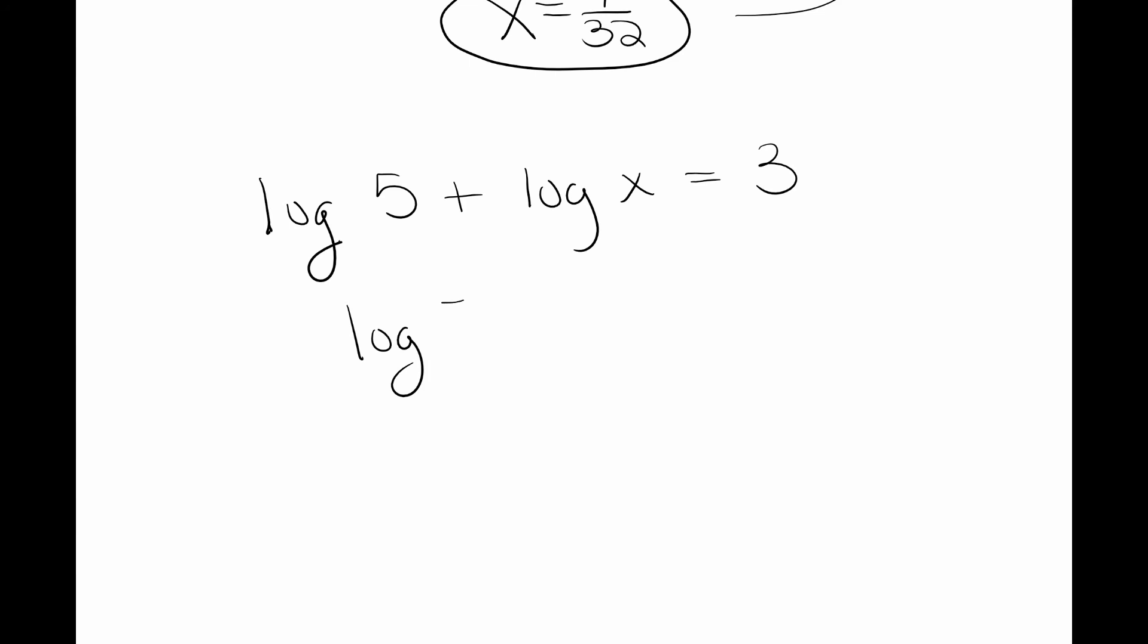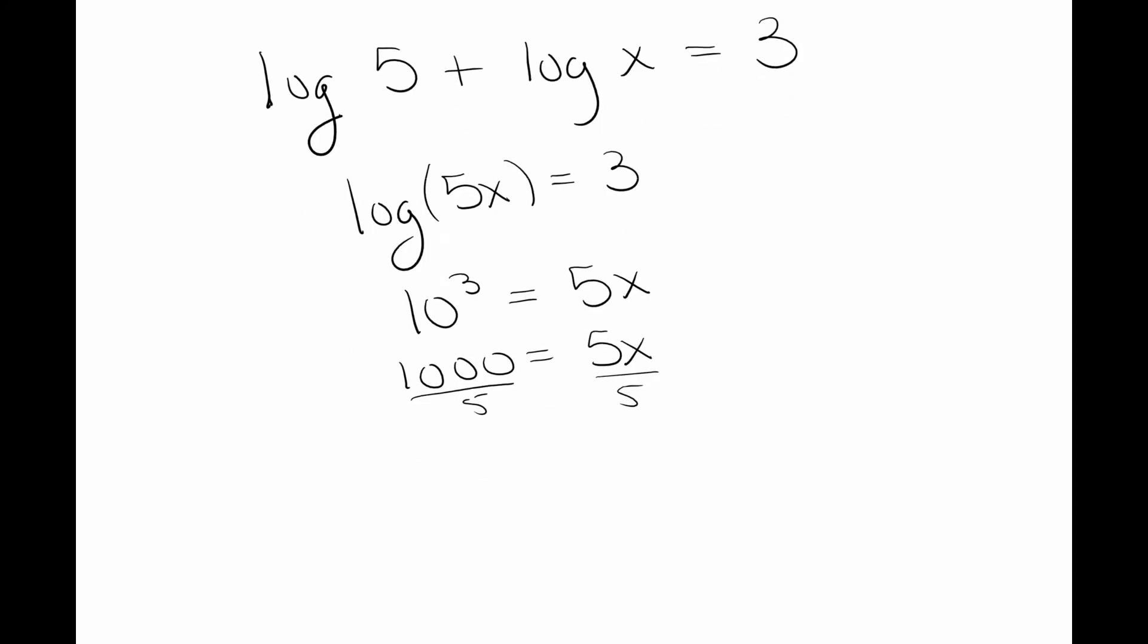The goal is to get a single log. I have addition, that means you multiply 5 and x to bring it together as one log. I'm changing this to exponential notation. The base is 10 because you don't see anything, so 10 raised to the third power is equal to 5x. 10 to the third power is 1000 equals 5x, then I divide by 5, I get 200, so x is equal to 200.